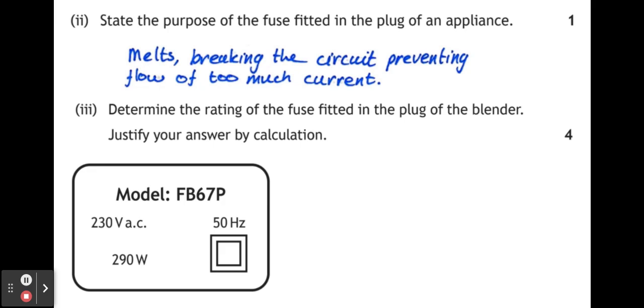However, this question asks us to justify that answer by calculation. What calculation can we do? We want to know how much current the fuse needs to be able to allow to pass, so we need to work out the current flowing. We have the power and the voltage, so we'll use the formula P equals IV. The power is 290, the voltage is 230, so the current is going to be 1.3 amps.